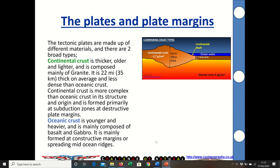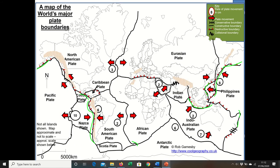The oceanic crust here is younger, heavier and mainly composed of things like basalt and gabbro. It's mainly formed at constructive margins or spreading mid-ocean ridges and it does get destroyed at destructive margins.